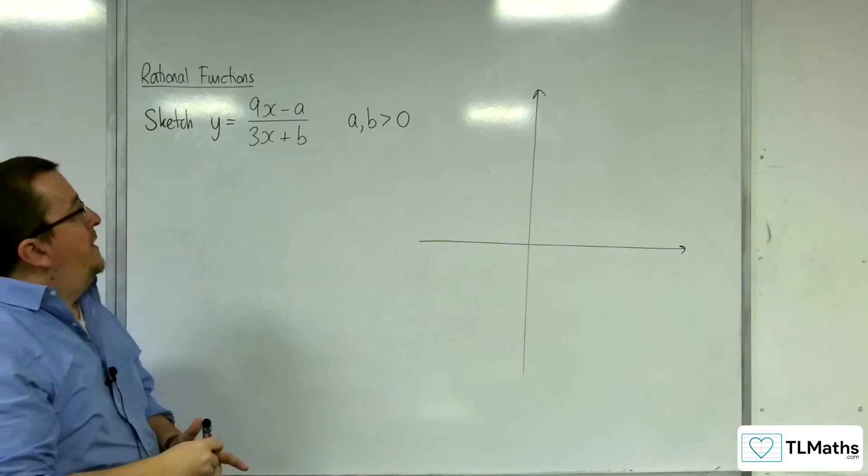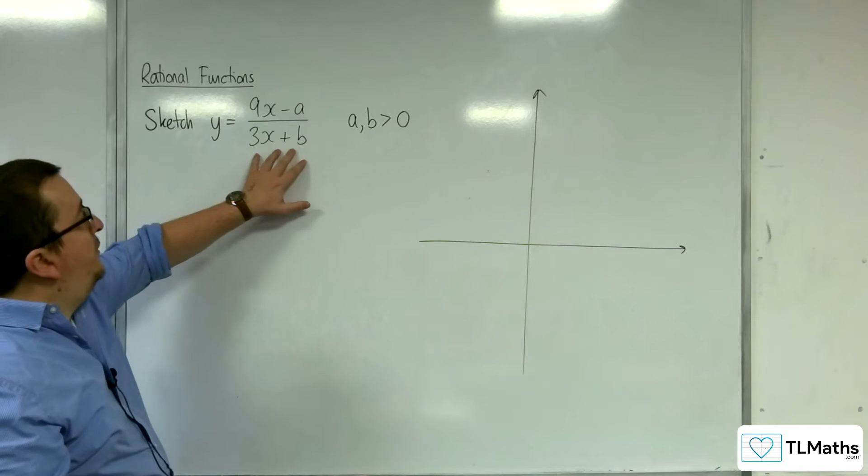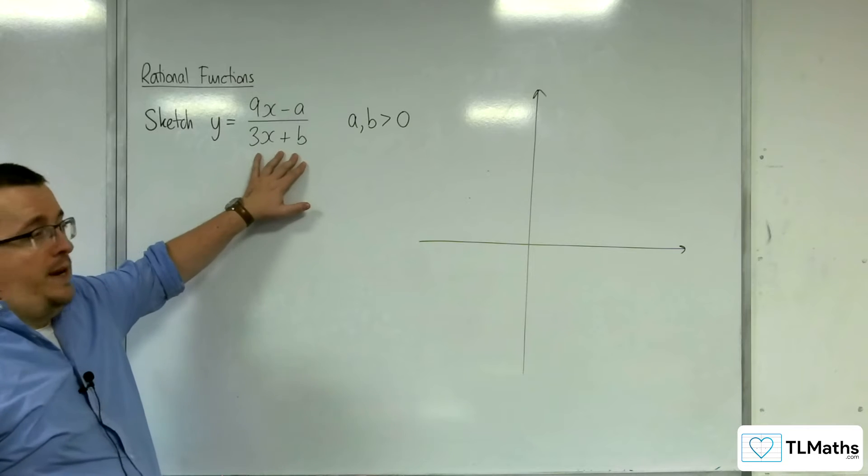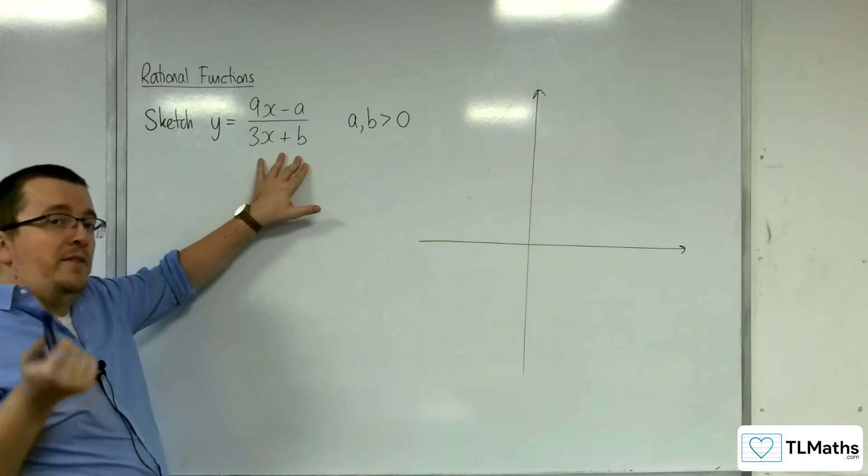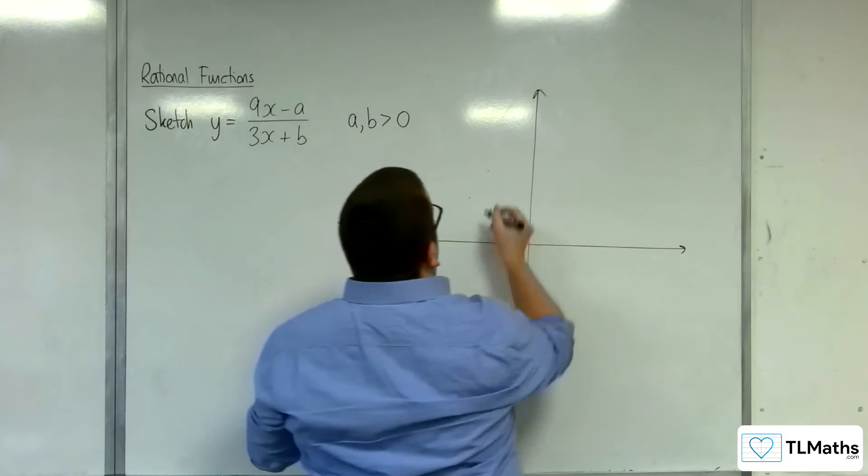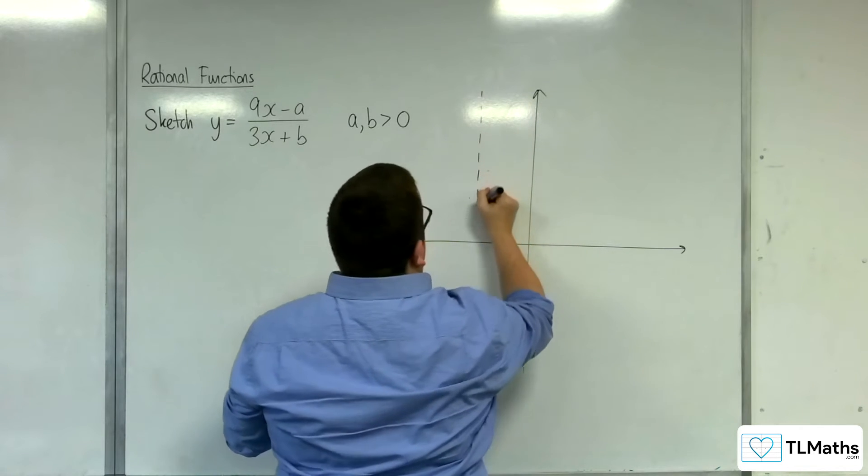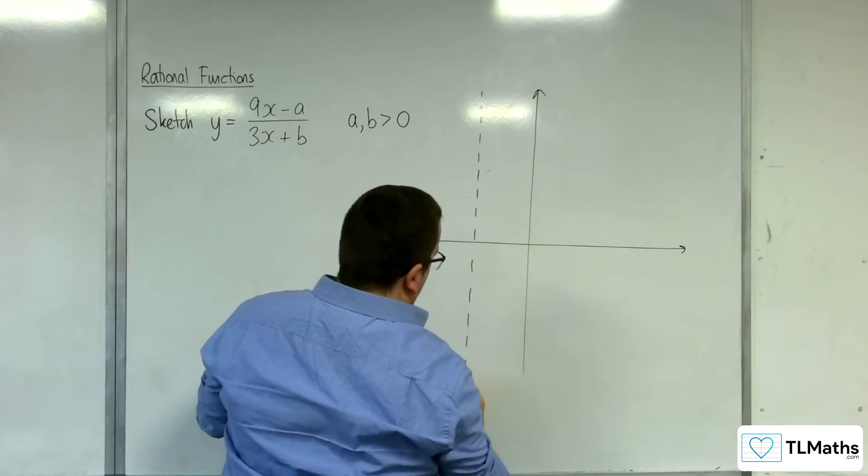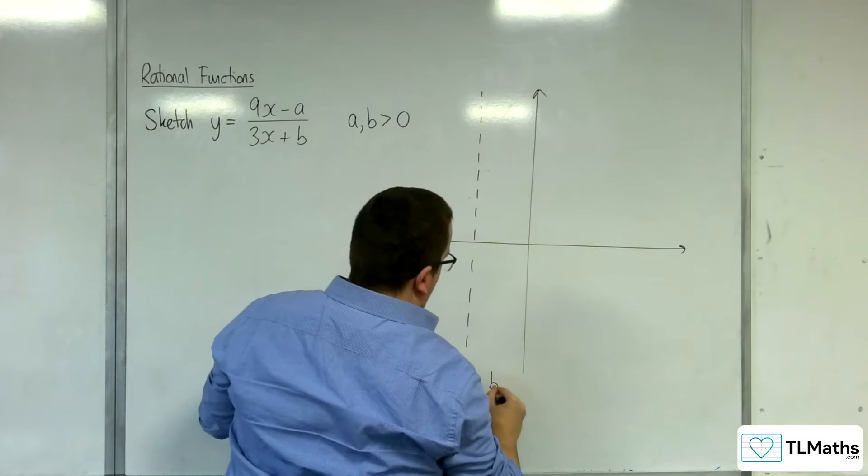So where is the vertical asymptote? Well, that's where the denominator is 0. So that would be at minus b over 3. Now we know that that value is definitely negative because b is positive. So minus b over 3 is definitely going to be over here. So x equals minus b over 3.